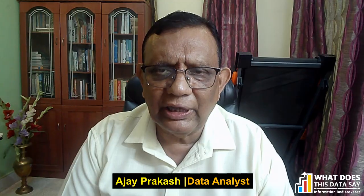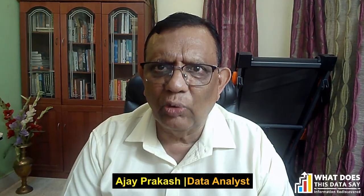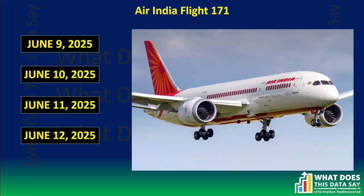What I'm going to show you is data which, according to me, no one has shown you till now — data from the FlightRadar24 application, a very popular aircraft tracking site. I'm going to show you data from Air India flight 171 from June 9th, 10th, and 11th, and compare it with the data from FlightRadar24 for the same flight on June 12th, to see if we find something out of the normal.